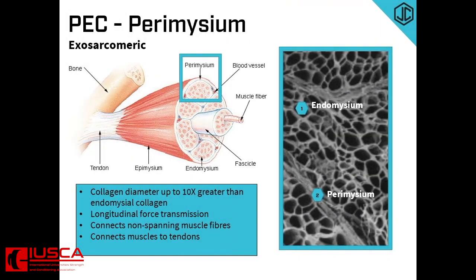Together with the sarcolemma, the endomysium resists both longitudinal and shear or transverse forces. It also allows transmission of force even if some muscle fibres are inactive, that is, have not been recruited even though lying adjacent to each other. Perimysium is composed of collagen fibres mainly type 1, 3, 4, 5 and 6, and the collagen diameter can be up to 10 times greater than the endomysial collagen. Perimysium encircles groups of muscle fibres called fascicles, as shown in the diagram, and is principally responsible for longitudinal transmission of force from the muscle to the bone. This connective tissue is also very important in connecting muscle fibres that do not run the entire length of the muscle and in connecting muscle with tendons. Because of the large amounts of perimysium in the muscle, it is considered the major contributor to passive resistance, stretch and elastic energy storage.